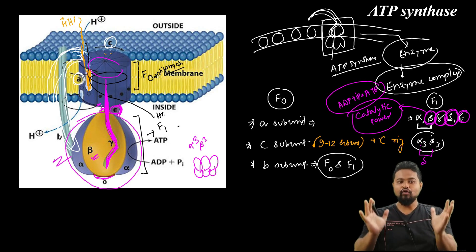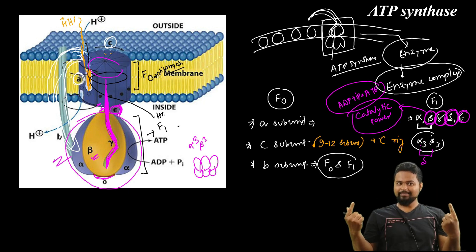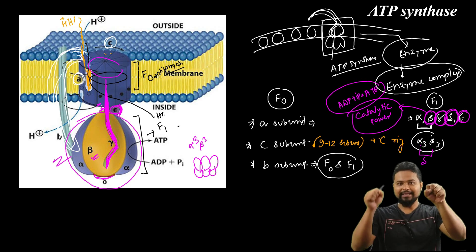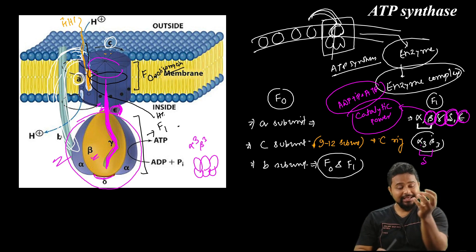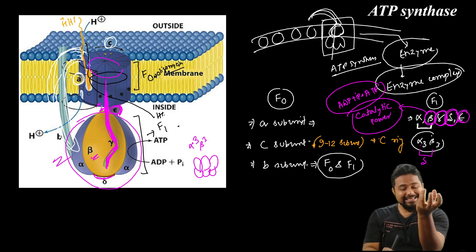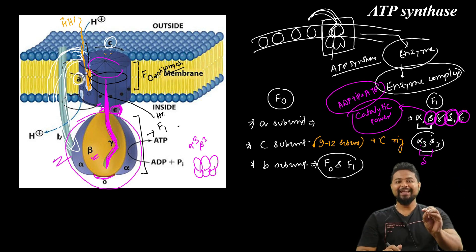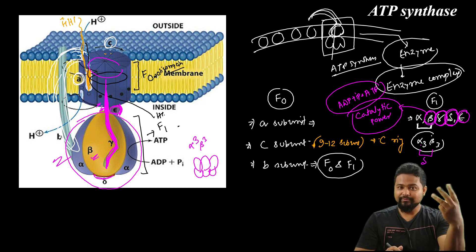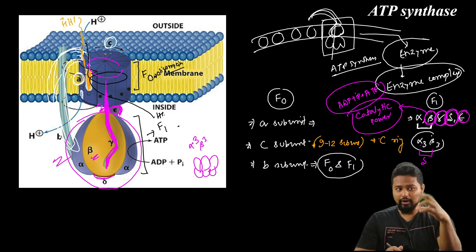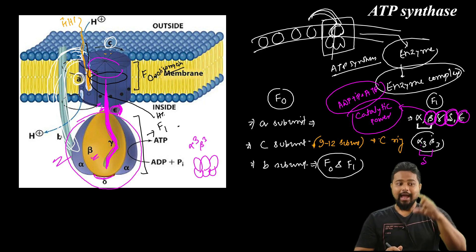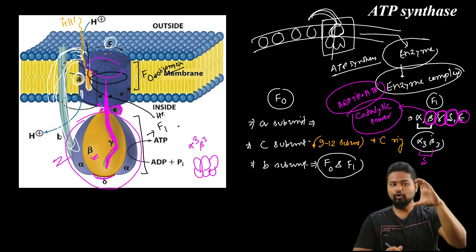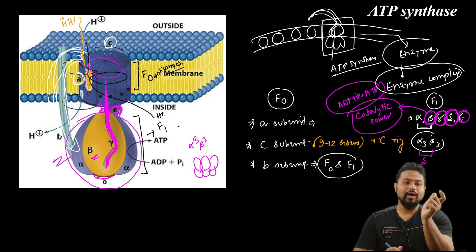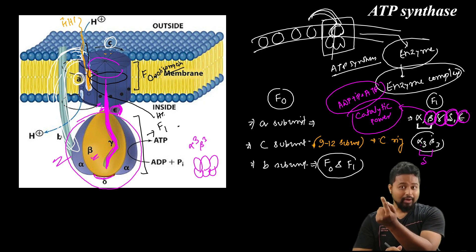To summarize the structure as an overview: the F0 particle contains the C ring through which hydrogen ions pass. The B subunit connects the F0 and F1 particles. The C ring is connected to gamma in F1, so when protons pass through the C ring it rotates.